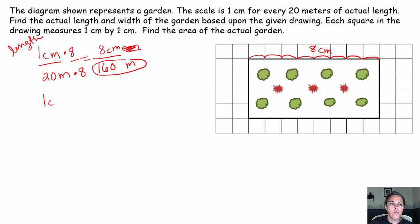Let's find the width of our actual. Again, one centimeter represents 20 meters. I want to find the width now of my drawing. This is one, two, three, four. So that's four centimeters on my drawing represents my width.